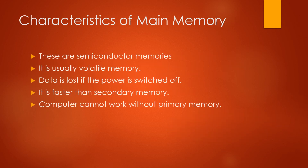Characteristics of main memory: These are semiconductor memories. It is usually volatile memory, which means data is lost if the power is switched off. It is faster than secondary memory. The computer cannot work without primary memory.